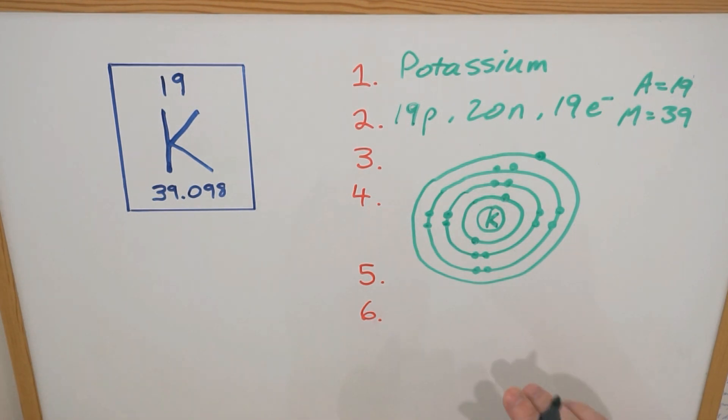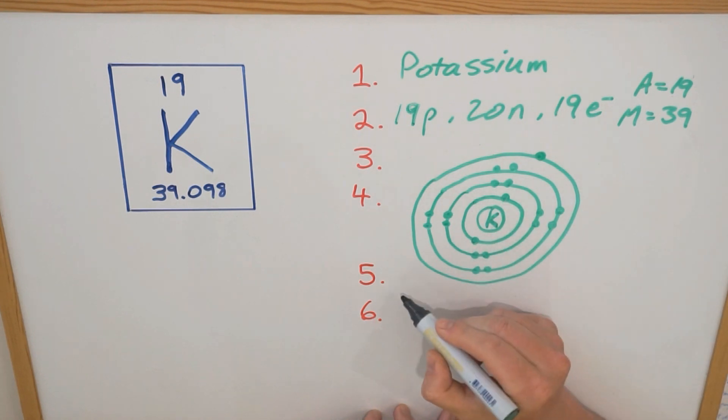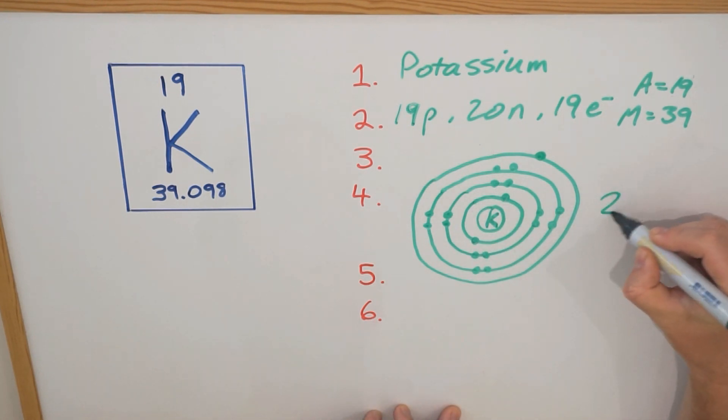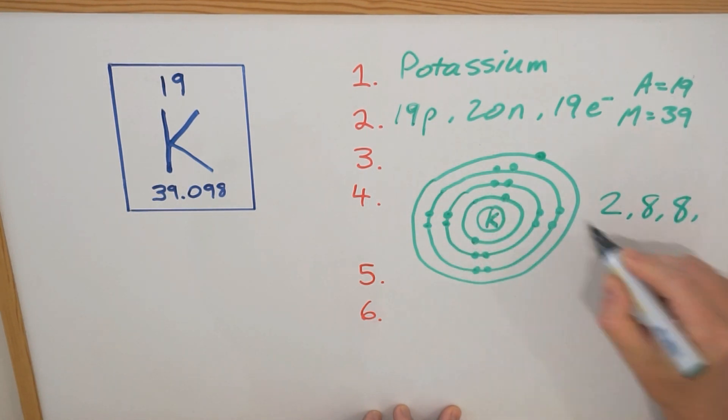The next thing you might get asked is to identify its electron configuration. We've done a shell diagram so we can determine the configuration just based on the diagram. We can go, okay, we've got two in the first shell, let's write it over here. So two in the first shell, we've got eight in the second, eight in the third, and then one in the fourth shell. And this is what we call the electron configuration - 2, 8, 8, 1. So we can determine that quite easily from this diagram.